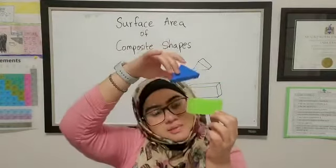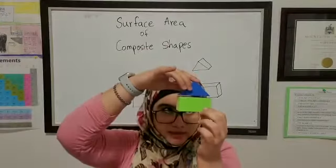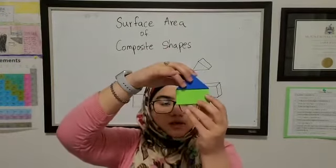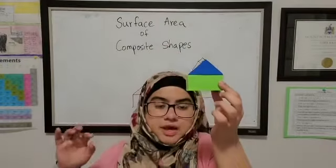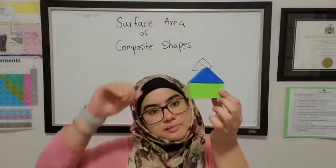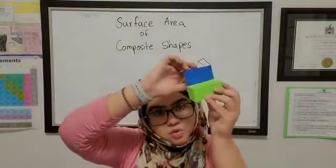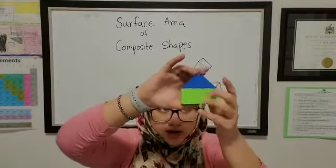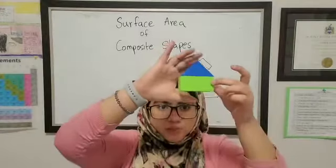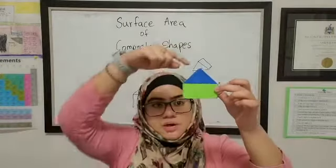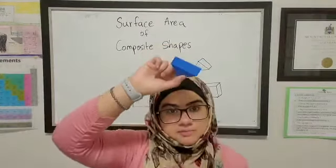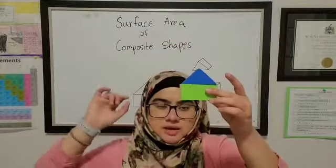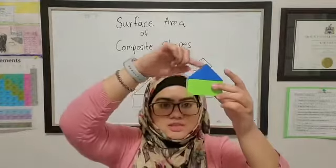As I mentioned in my previous video, a rectangular prism has six faces. But when it becomes part of a composite shape — for example, with a triangular prism on top — the top face of the rectangular prism and the bottom face of the triangular prism overlap. Overlap means they are not exposed, they are covered, so we only find the area of the faces which are exposed.